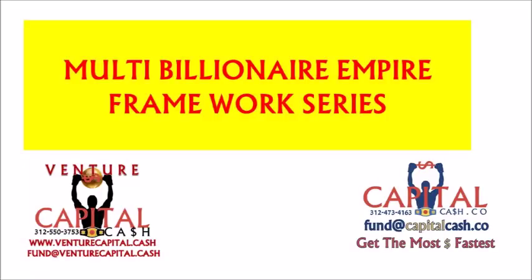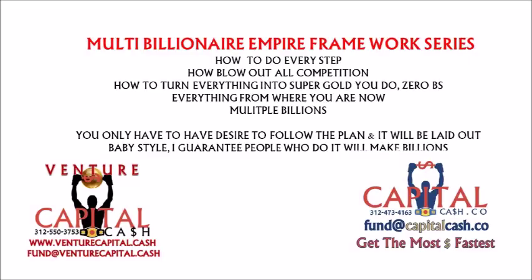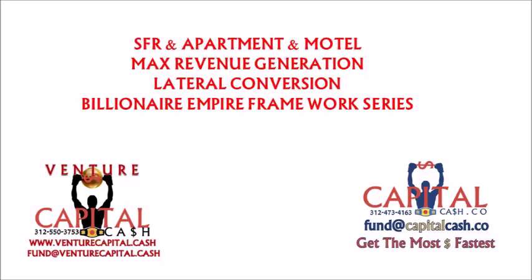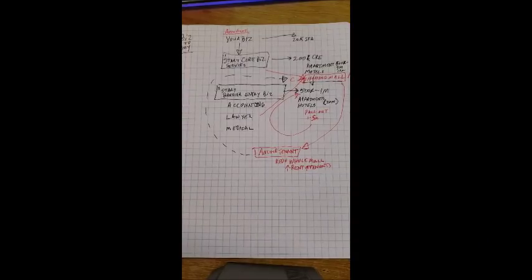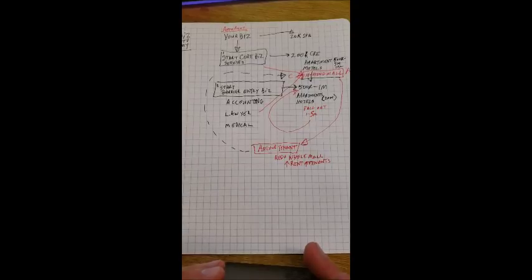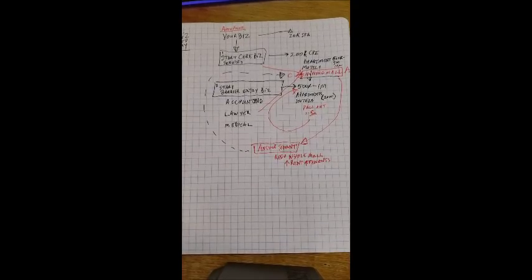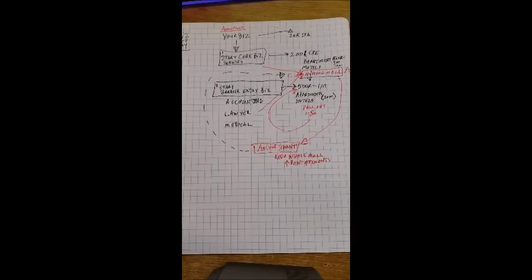Welcome to the multi-billionaire empire framework series. I'm going to tell you how to make multiple billions of dollars from where you are right now. You can skip any one of these phases, start in the middle, start at the beginning and jump to the end to make this kind of money. But this is how you can do it when you don't have anything. I'm going to give you the framework — how to make billions of dollars from start to finish. I'm going to go over what's called lateral conversions, commercial real estate lateral conversions, where you convert a motel, apartment, or hotel into another use and generate income out of it, raise the revenue. That is one piece of the puzzle — I'm going to give you the whole picture here.